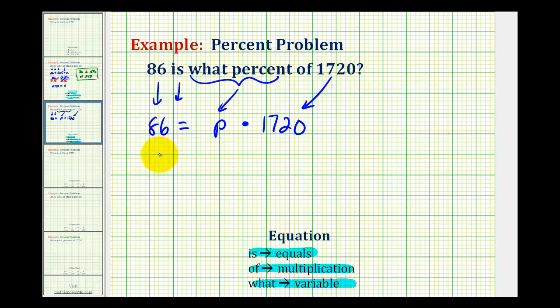Let's rewrite our equation as 86 equals, and p times 1,720 is just 1,720p.